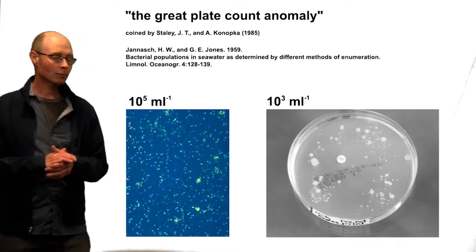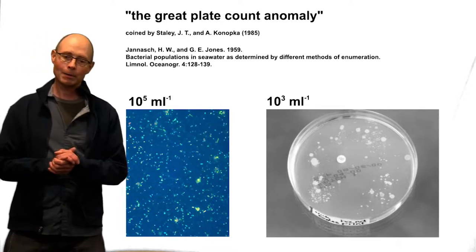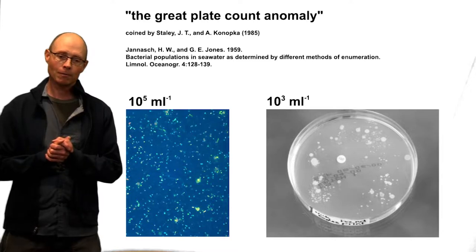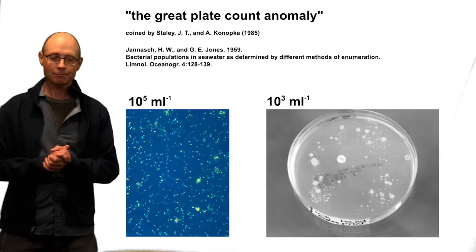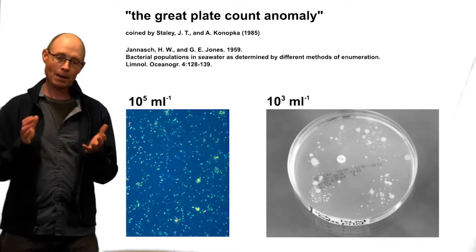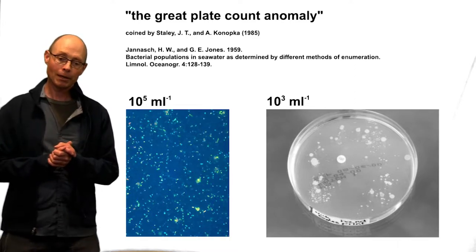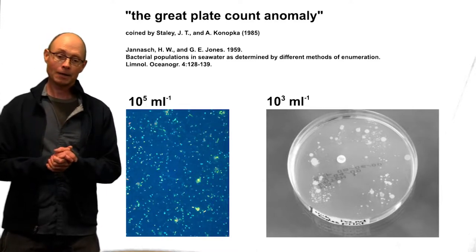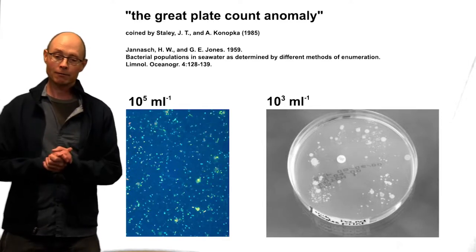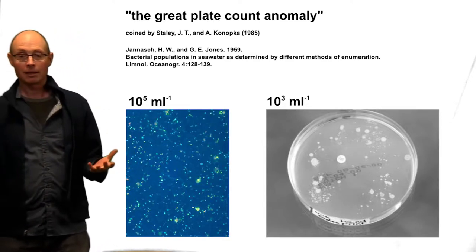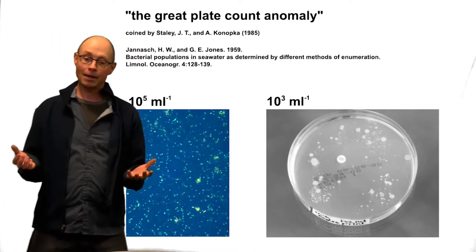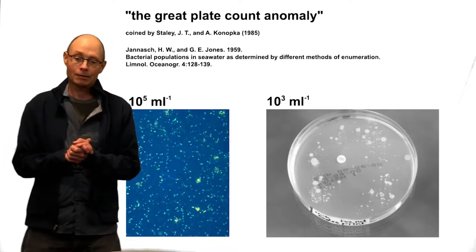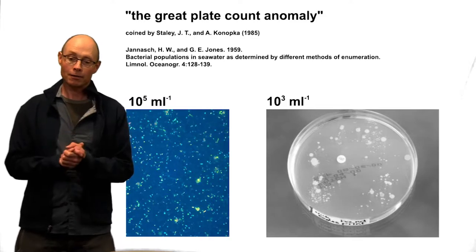This problem was first noticed in the last century when people developed fluorescent dyes to see bacteria under the microscope. What you see here is a picture of seawater where there are about 10^5 cells of bacteria per milliliter of seawater, but if you try to grow them in the lab you only get one percent of that. That's a really big problem — how can we say anything about what happens in the wild when there's only one percent we can study? What are the other 99% doing?